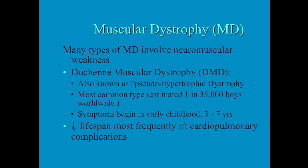Symptoms tend to begin in early childhood, about the age of three. They walked and ran and jumped and kicked and climbed until about age three, and then the parents start noticing that the child is having some weakness and difficulty getting up. In general they can live into their 20s and 30s, and the most frequent cause of death is from cardiopulmonary complications, primarily pneumonia.